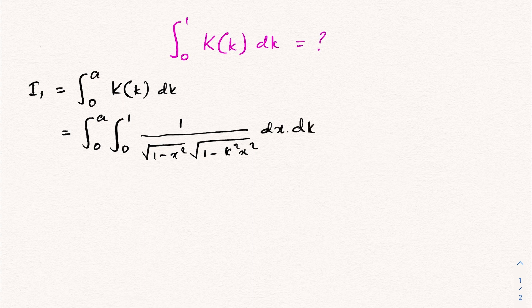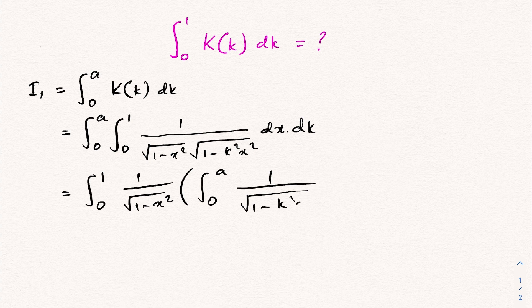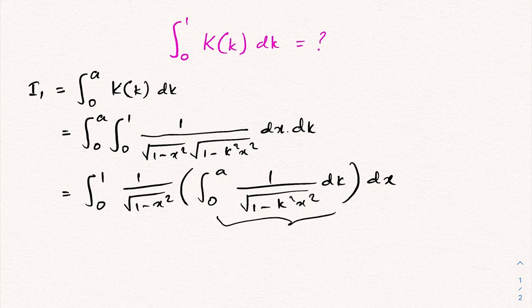Then we can rearrange: integral from 0 to 1 of 1 over the square root of (1 minus x squared), times the integral from 0 to a of 1 over the square root of (1 minus k squared x squared) dk, all in dx. To evaluate this inner integral, we can take a substitution because we have k times x.